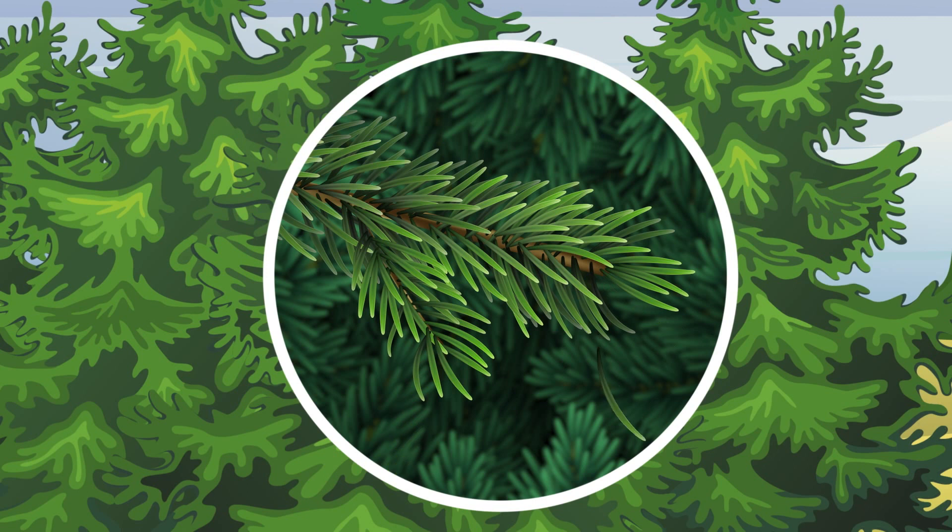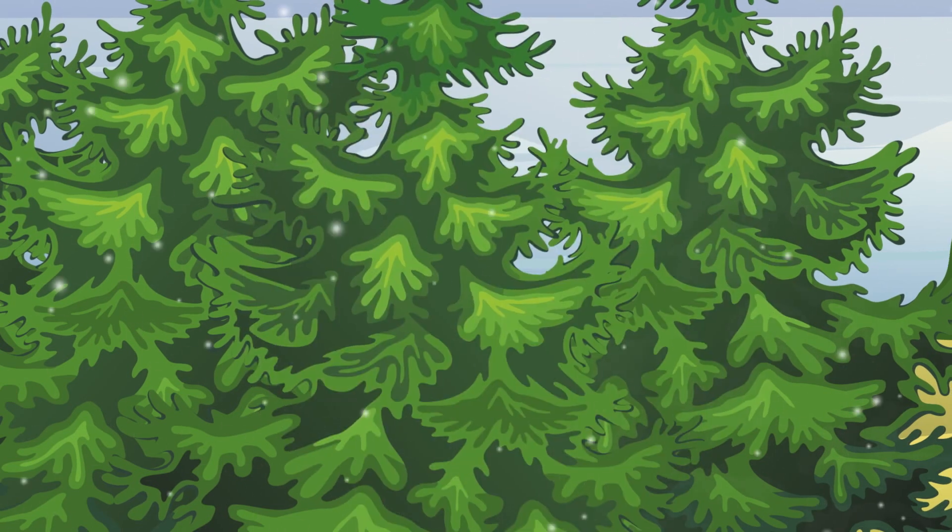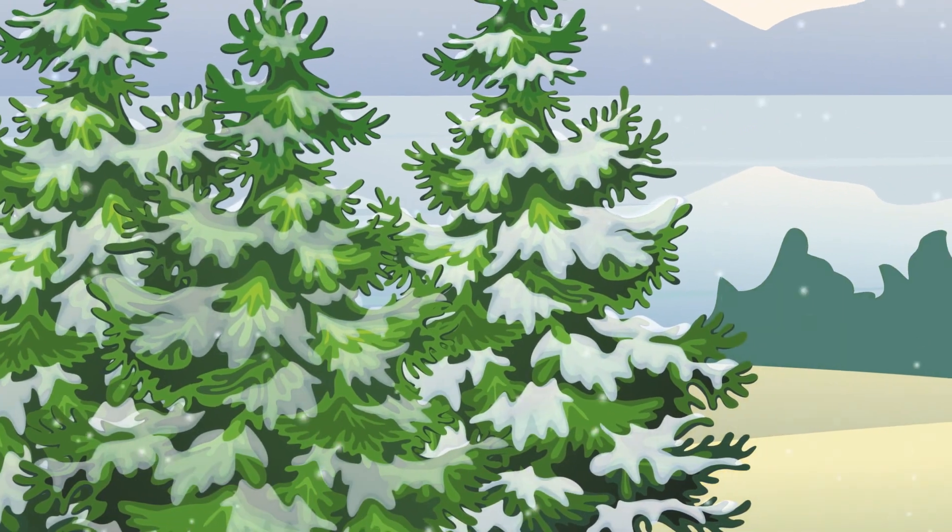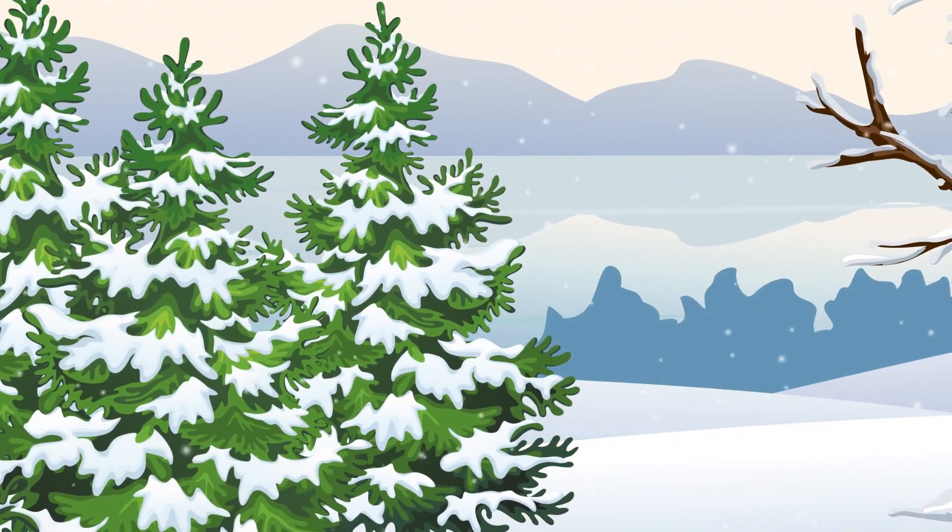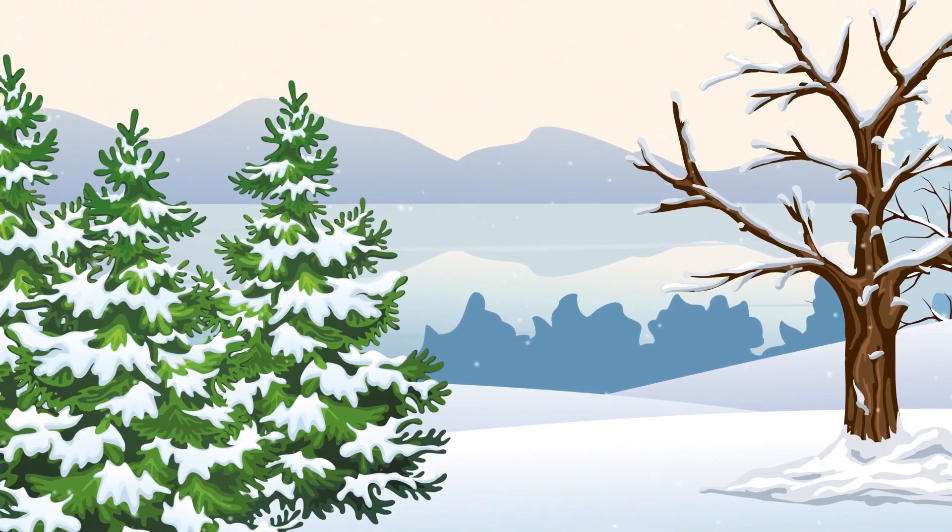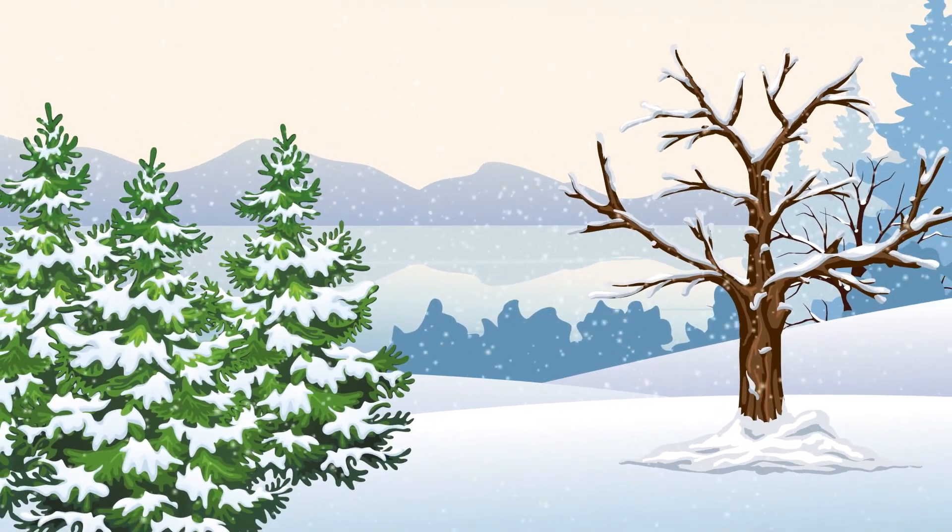But that doesn't mean they never drop their leaves. Instead of shedding as it gets cold out, evergreens just drop a few leaves here or there all year while new ones grow in. Kind of like how our hair grows on our heads. So now we know what kind of tree stays green all the time. But why?